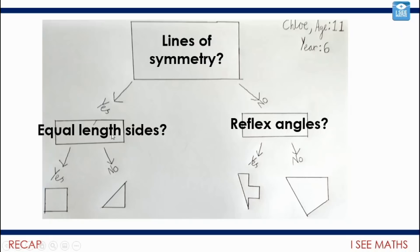We had here equal length sides. Well, yes for the square, but all these sides aren't in equal length for the triangle. And then we had for the bottom two shapes here, reflex angles. Well, yes, there are two reflex angles here, one here and one here. And then no for the shape on the right. Again, great stuff to see these wonderful examples.